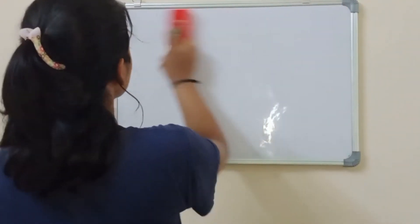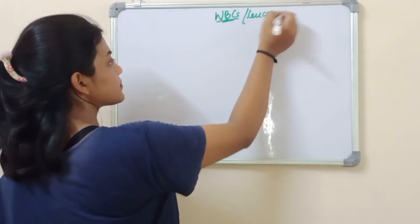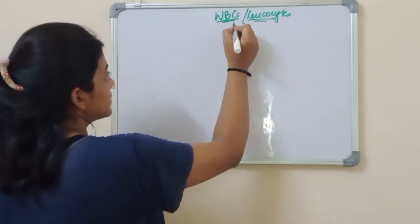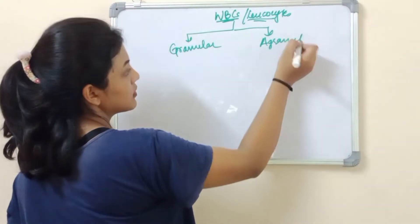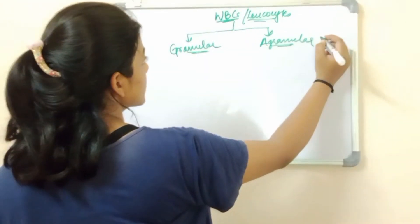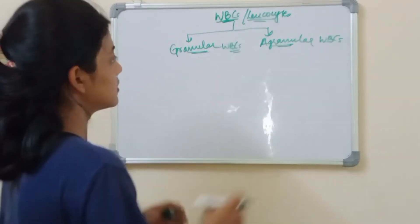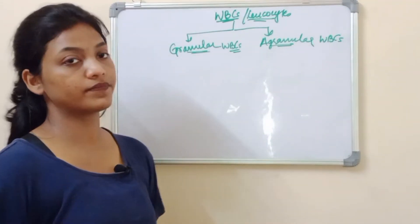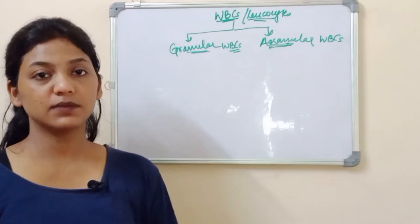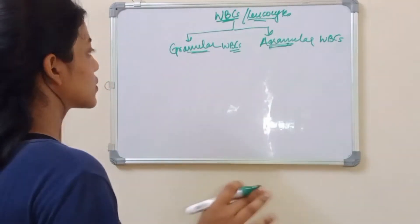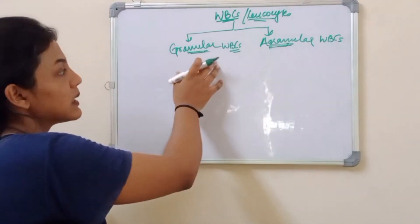WBCs are the leucocytes. WBCs or leucocytes are divided into granular and agranular types. Agranular WBCs are not named so because they lack granules — the granules are present, but after staining they are not visible under the microscope. In granular WBCs, after staining, the granules are clearly visible.